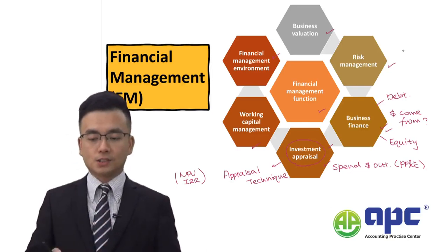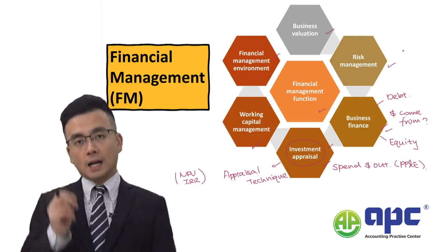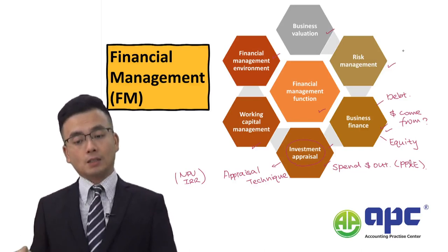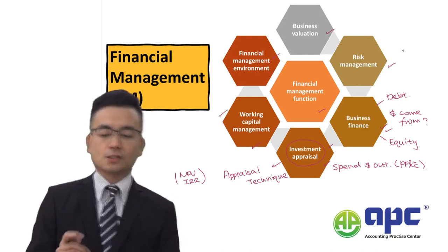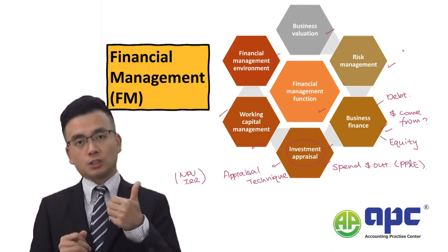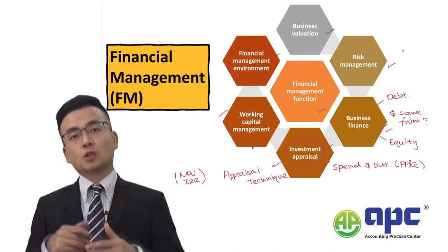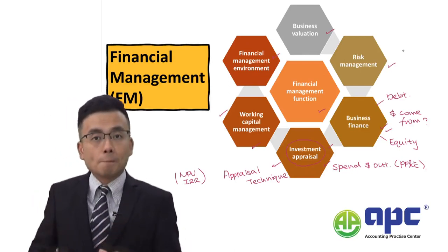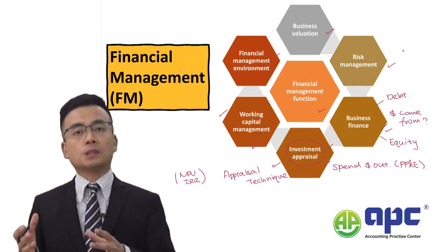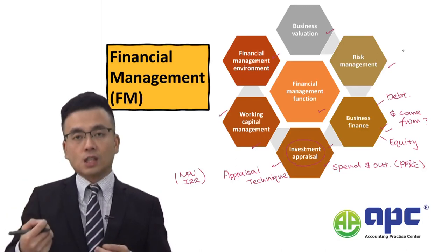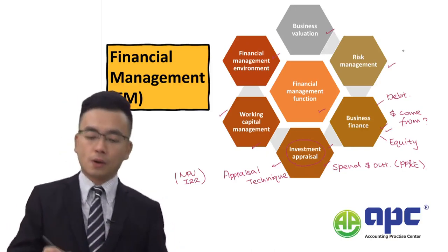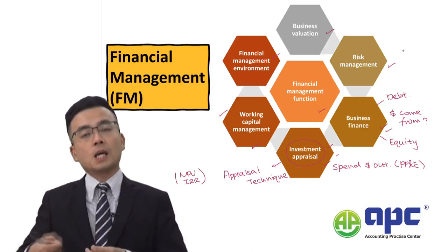It's also very important to understand that having money in place will increase the level of dividends paid to shareholders. On the other hand, we also have working capital management. Working capital relates to inventories, receivables, payables, and cash — the money tied up in our trading cycle, involving current assets as well as current liabilities. For investment appraisal, it's the money tied up in non-current assets.